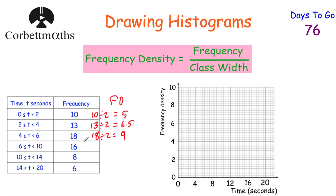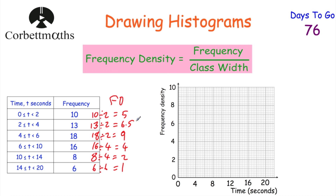Our next group has frequency 16 and class width 4, so 16 divided by 4 equals 4. The next group has frequency 8 divided by class width 4, giving 2. Finally, frequency 6 divided by class width 6 equals 1. So we've worked out all the frequency densities: 5, 6.5, 9, 4, 2, and 1 — a much fairer way to compare them than just looking at frequencies.